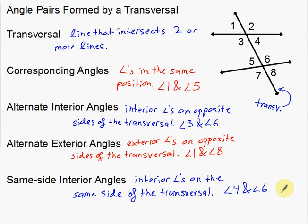And that's it. Those are my examples of a transversal, corresponding angles, alternate interior angles, alternate exterior angles, and same side interior angles. In the next video I'm going to go over examples of how to apply them, and I'm also going to go over the abbreviations for all of them. You need to check out that next video to know how to abbreviate all these different long vocabulary words.